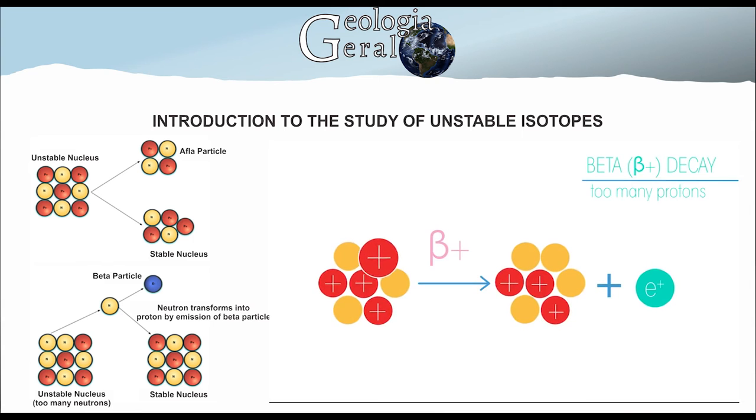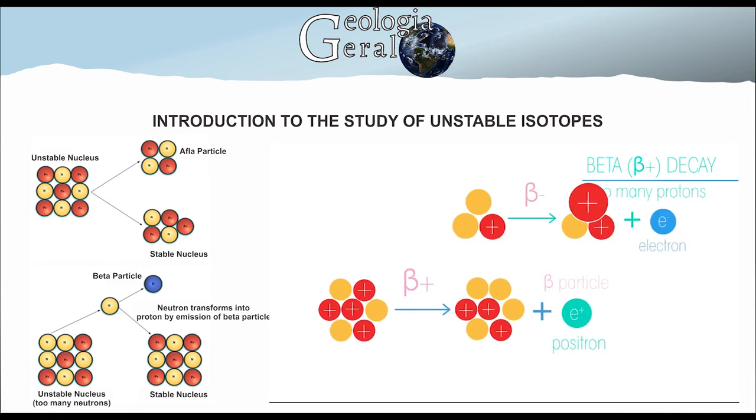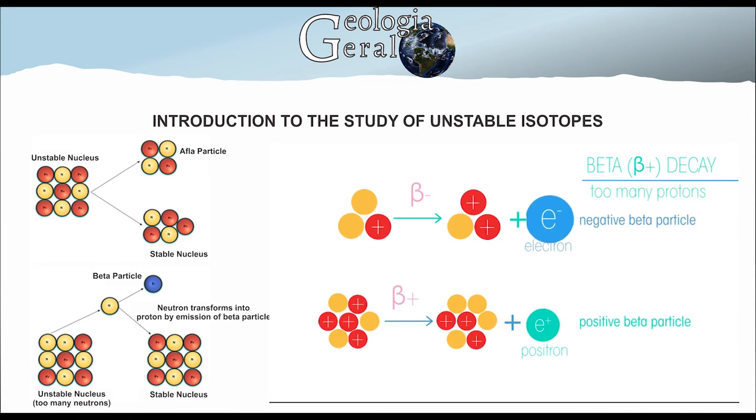In the case of capture, one electron is captured by the element's nucleus, and it takes the opposite path, bonding with one proton and forming one neutron.